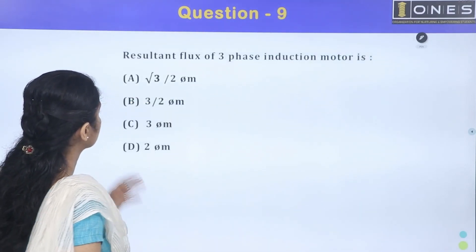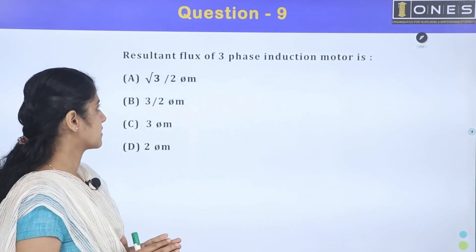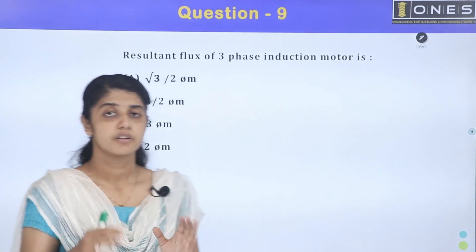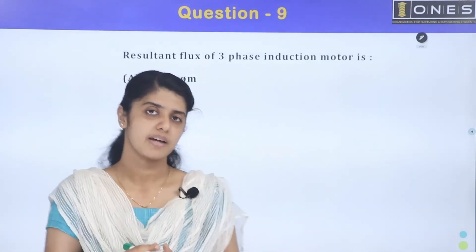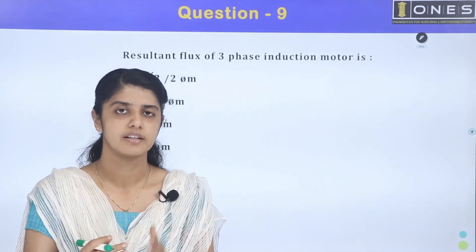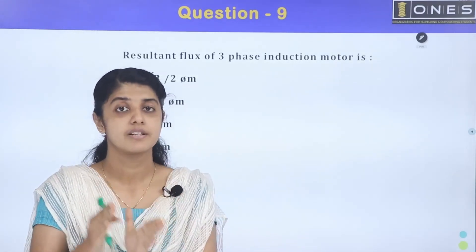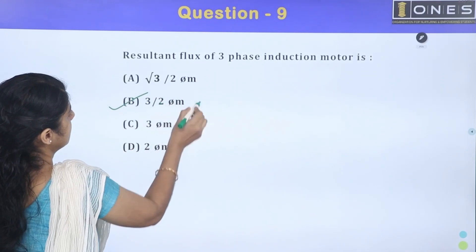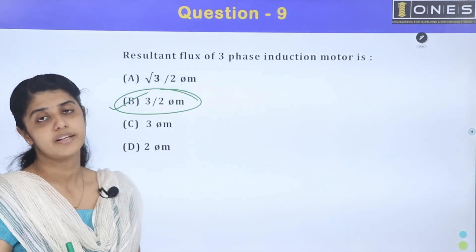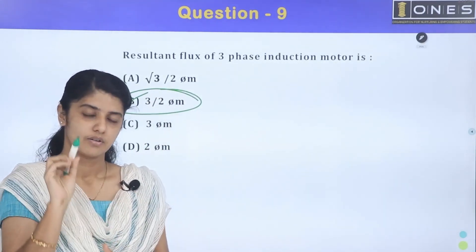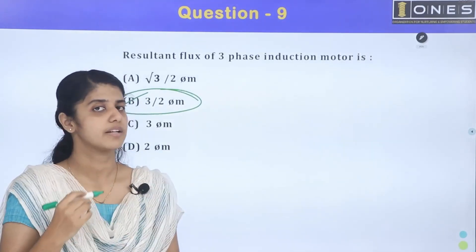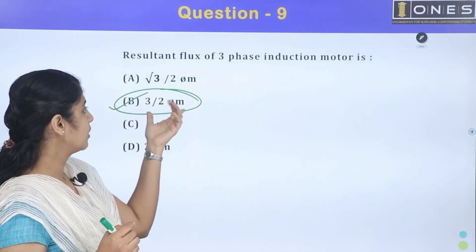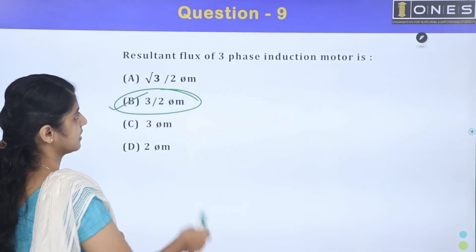Next question: what is the resultant flux of a 3-phase induction motor? The working principle involves a rotating magnetic field. The magnitude of the resultant flux is calculated as 1.5φm — that is, 3/2 of φm — which is a constant magnitude, though the direction changes, giving us a rotating flux.